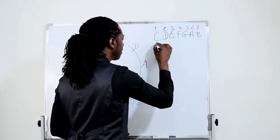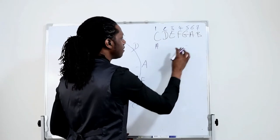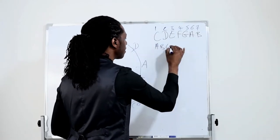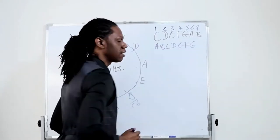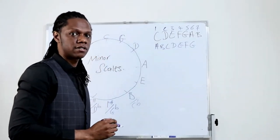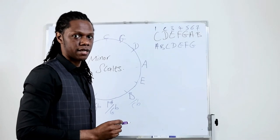So to get the A natural minor scale, it's going to be A, B, C, D, E, F, G. And that is your A natural minor scale.